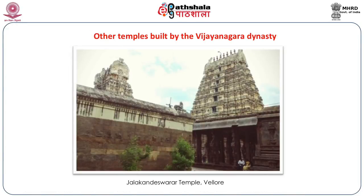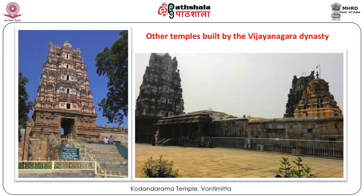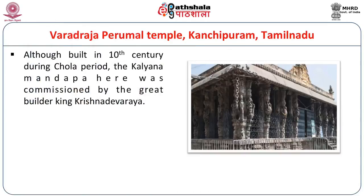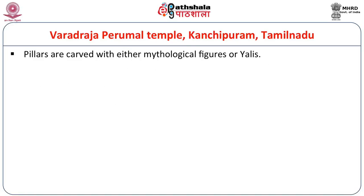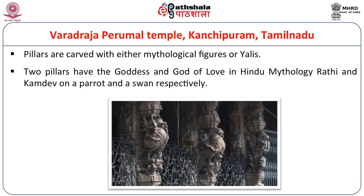These are a few of the temples where the Rayas — the Vijayanagara dynasty kings — made additions. The Varadaraja Perumal temple in Kanchipuram, Tamil Nadu: although this temple was built in the 10th century during the Chola period, the Kalyanmandap was commissioned by the great Krishnadevaraya. Intricately carved pillars form the exterior of the Mandapa, which has a total of 100 pillars — 96 in stone and 4 in wood. These pillars have mythological figures or Yalis on them, and two of them have the goddess and god of love in Hindu mythology — Rathi and Kamdev — on a parrot and swan respectively.